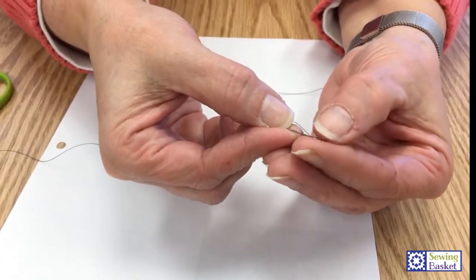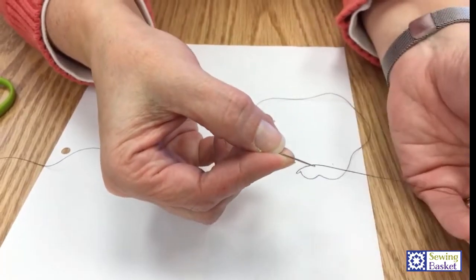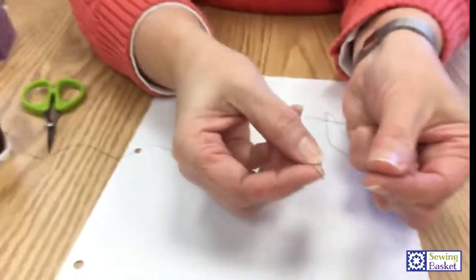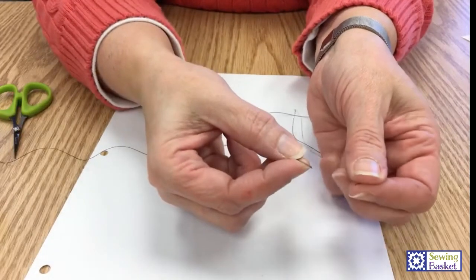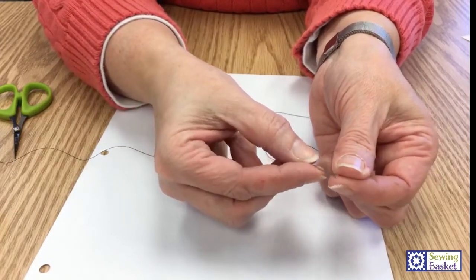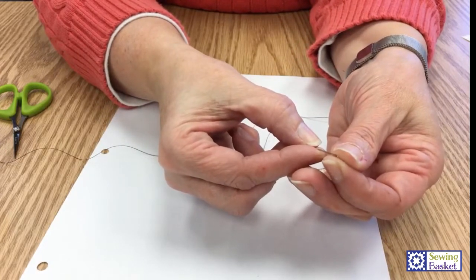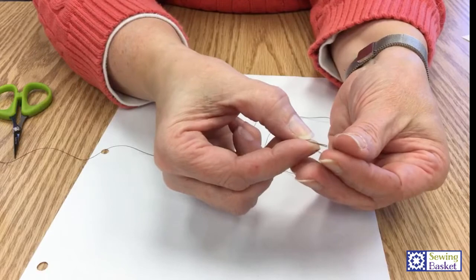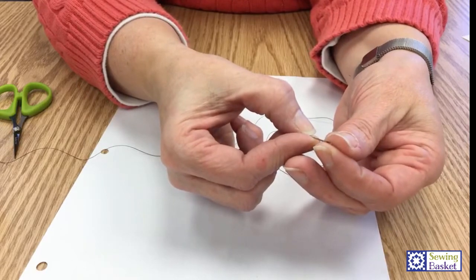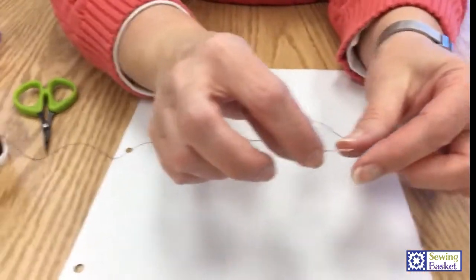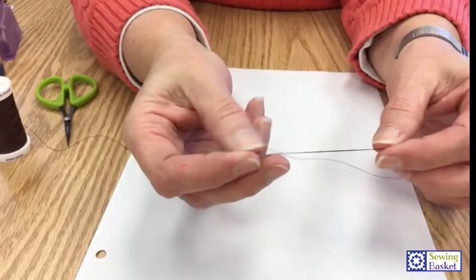So again, I'll do it one more time. I'm going to take that thread, pull it back into my fingers so I can just see the tip of it, and then I'm going to lay the needle onto the tip of that thread. It just makes threading the needle much easier to stabilize the thread first.